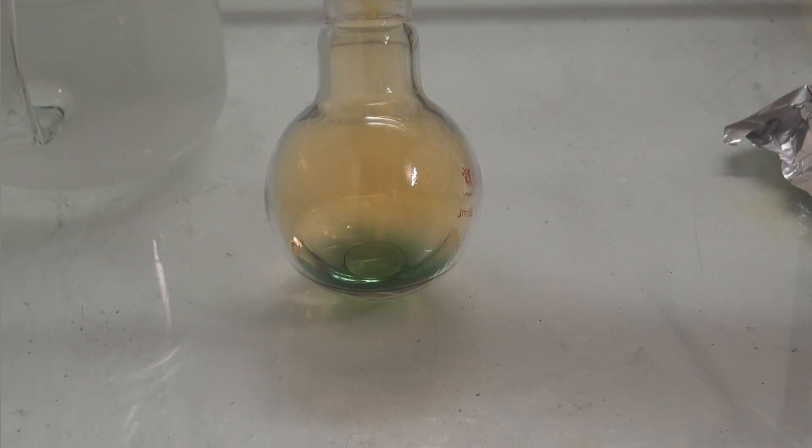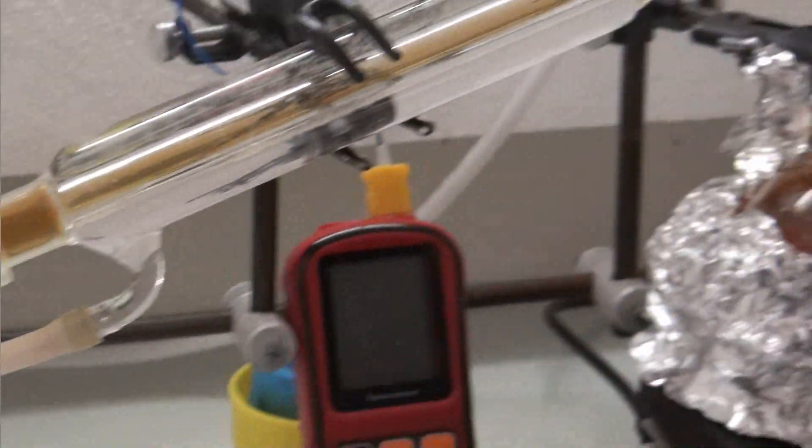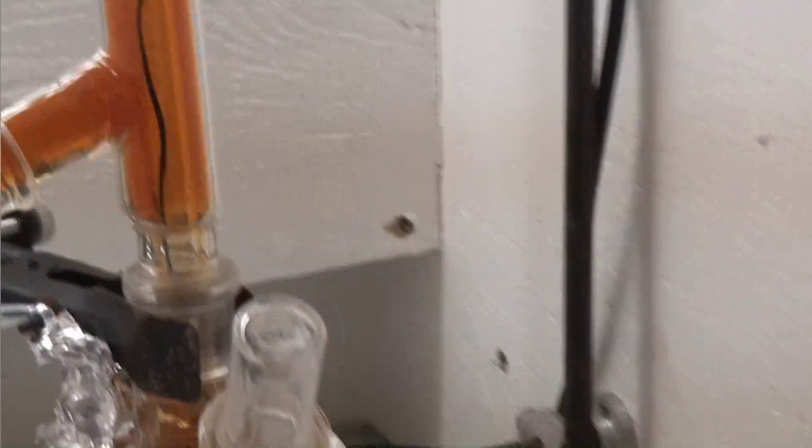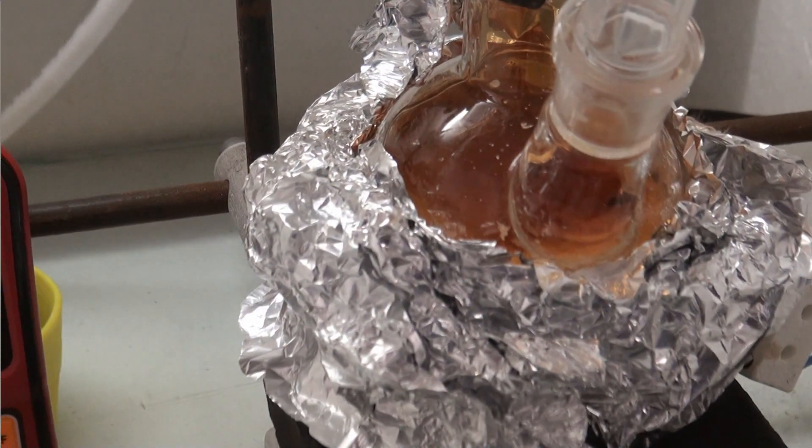One hour later, the distillate became slightly green. I was uncertain why this was happening, because the flask was clean, which must mean that the compound giving this color is volatile and came over with the other distillate.